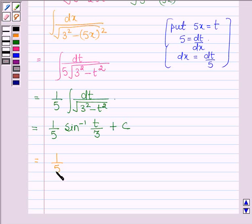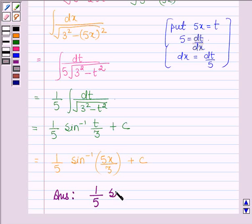This is further equal to 1 upon 5 sine inverse t is 5x upon 3 plus c. Thus, on integrating the given function, we get 1 upon 5 sine inverse 5x upon 3 plus c.